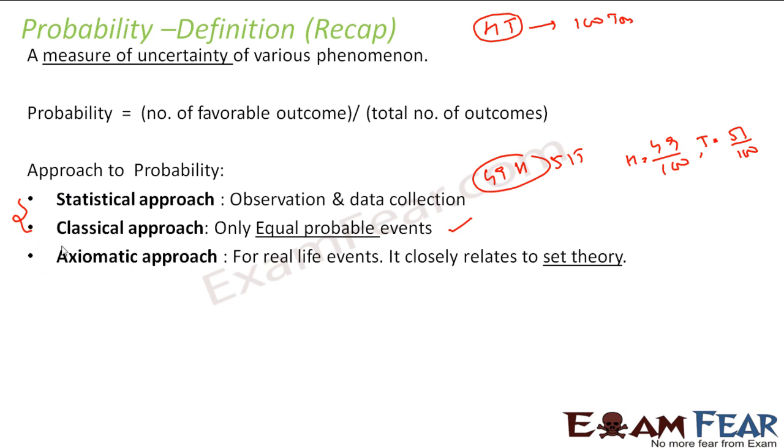We have studied all these approaches in our previous classes, and this axiomatic approach is more inclined to the real life events, and here we deal generally with set theory. We formulate a set of the total events and then we formulate the set of the event we are looking for and then we find the probability.